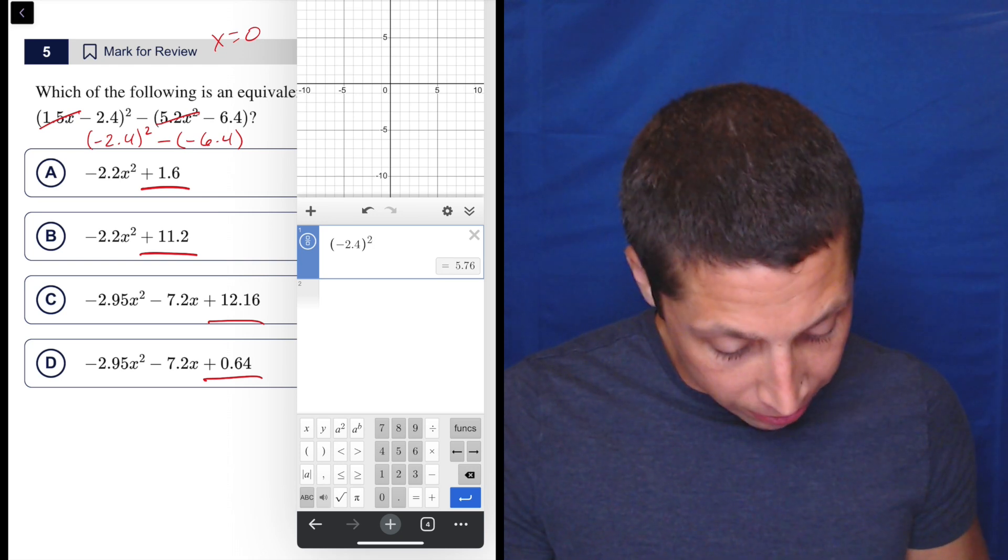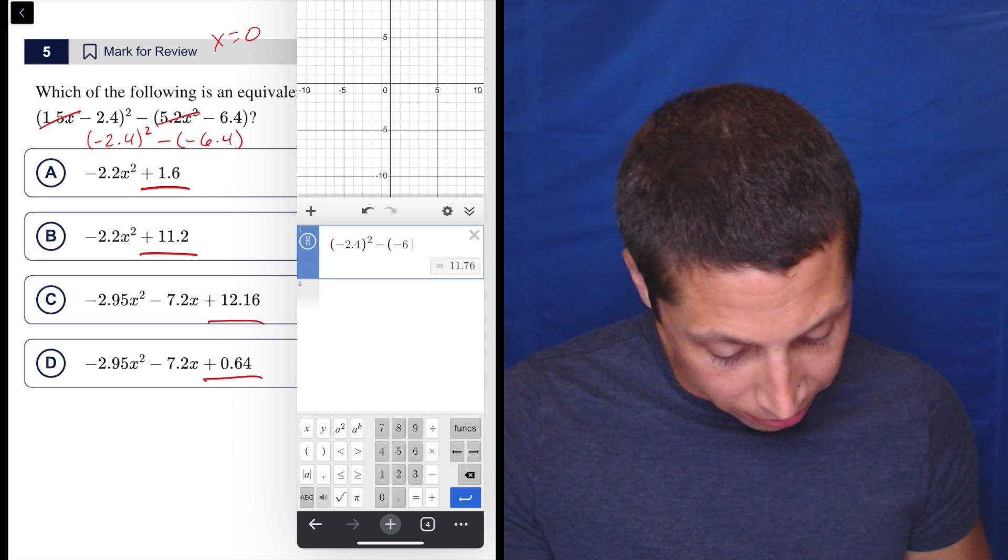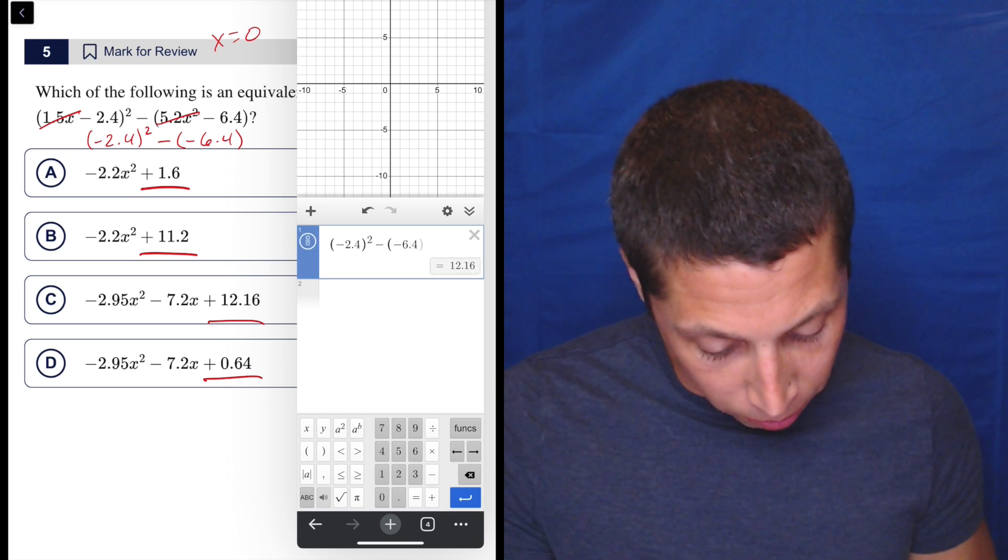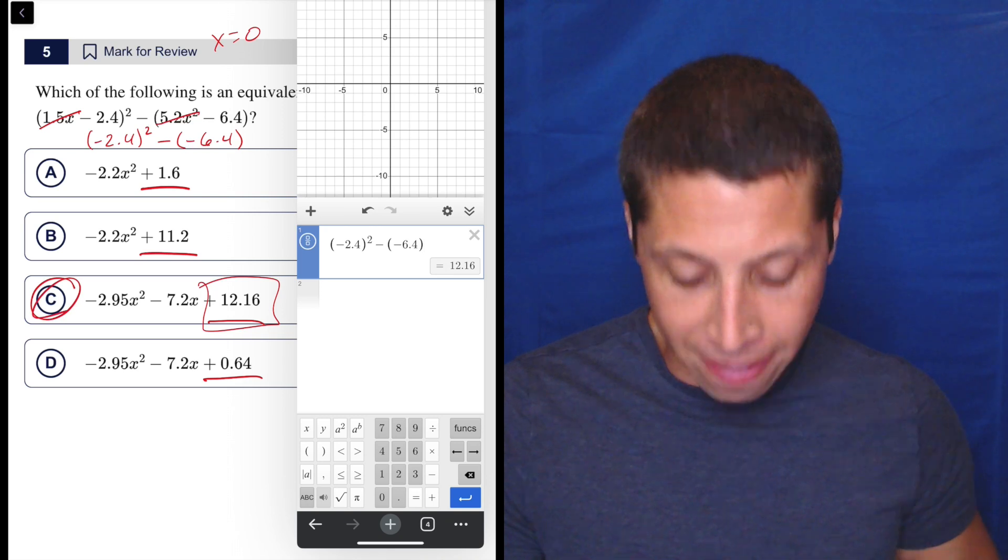And then it's minus, and this part you can probably do in your head, but I'll just do it exactly as written so I don't mess it up, minus 6.4 in parentheses, and they give me 12.16, which is in choice C, and that's it.